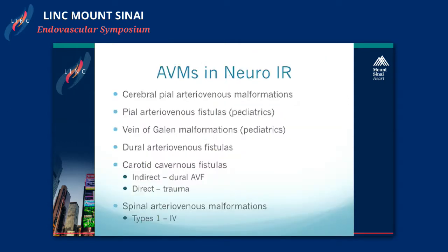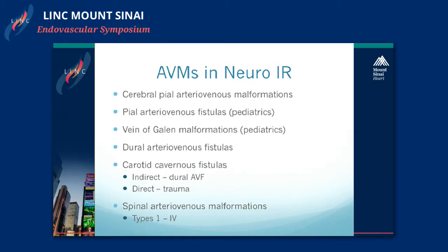As a neurointerventionist, we divide AVMs into many different types depending on where they're located. In the cerebral matter itself, pial malformations range from nidal-type malformations to fistulas, which occur mainly in pediatrics. Vein of Galen malformations occur mainly in newborns. There are also malformations that are more fistulous and acquired later in life, occurring in the dura or lining of the brain, including the carotid cavernous region where direct fistulas from trauma can also be found. There is also a whole classification for spinal AVMs.